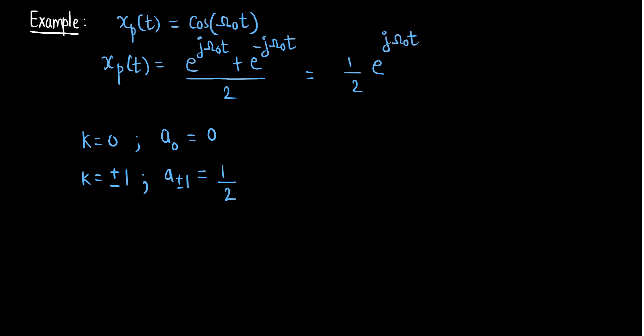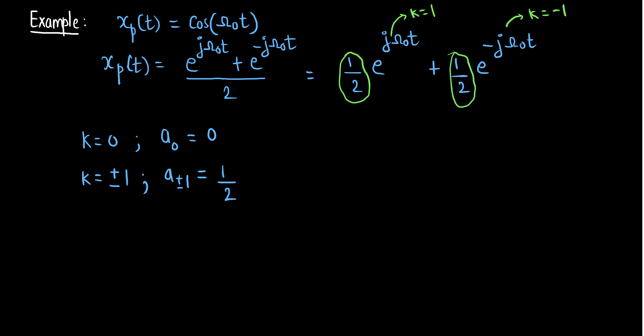We can see that k·ω₀ appears here: for the first term k = +1 and for the second term k = −1. So for k = +1 and k = −1, the Fourier series coefficient is 1/2 each. These are the coefficients of the complex exponentials, so the Fourier series coefficients of xp(t) = cos(ω₀t) exist only at k = ±1, each with value 1/2.